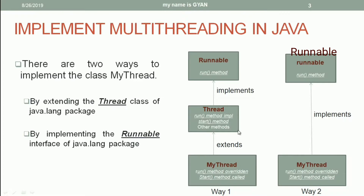The class MyThread extends the class Thread, and the class Thread implements the interface Runnable. The interface Runnable has a run() method, which is implemented by the class Thread. The class Thread also has a start() method. MyThread overrides the run() method of the class Thread, and then calls the start() method of the class Thread to start a new thread.